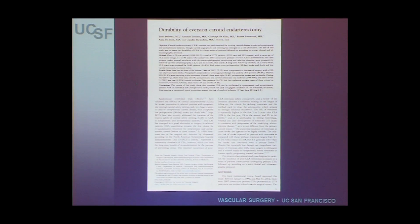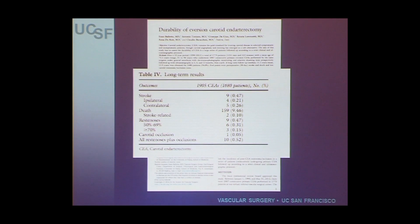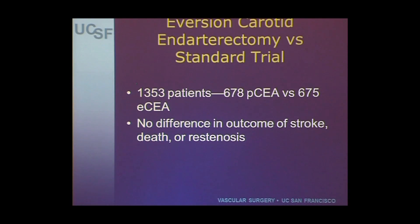Because of this, there began to be interest in eversion with the suggestion that it reduces re-stenosis or recurrent carotid disease. They've now repeated their evaluation with 1,905 endarterectomies, and again the stroke risk is very low and the re-stenosis rate is under 1%, including carotid occlusion or moderate to severe re-stenosis. The so-called Everest trial — eversion carotid endarterectomy versus standard — randomized 1,353 patients. Although it included patients with both primary closure and patch angioplasty, if you remove the primary closure patients there was really no difference in outcomes.